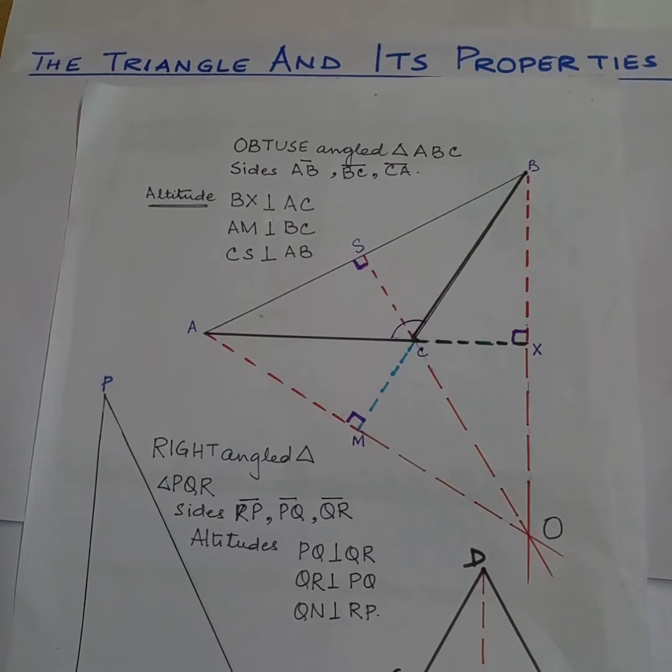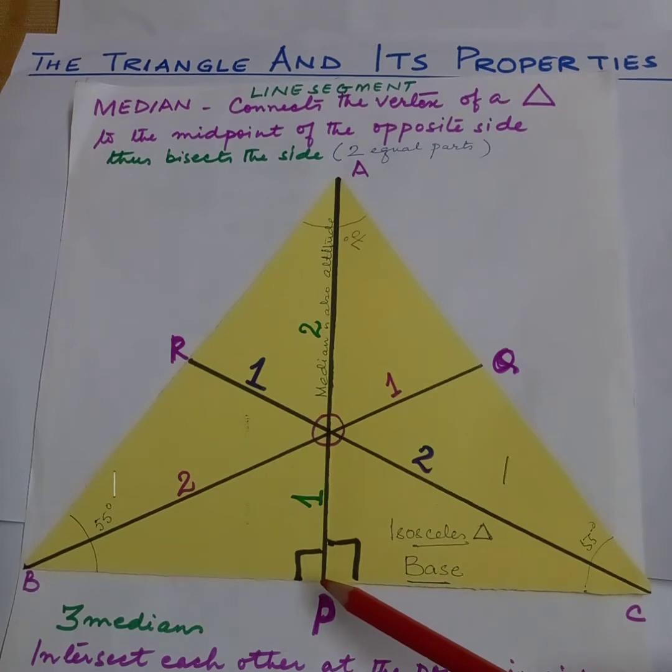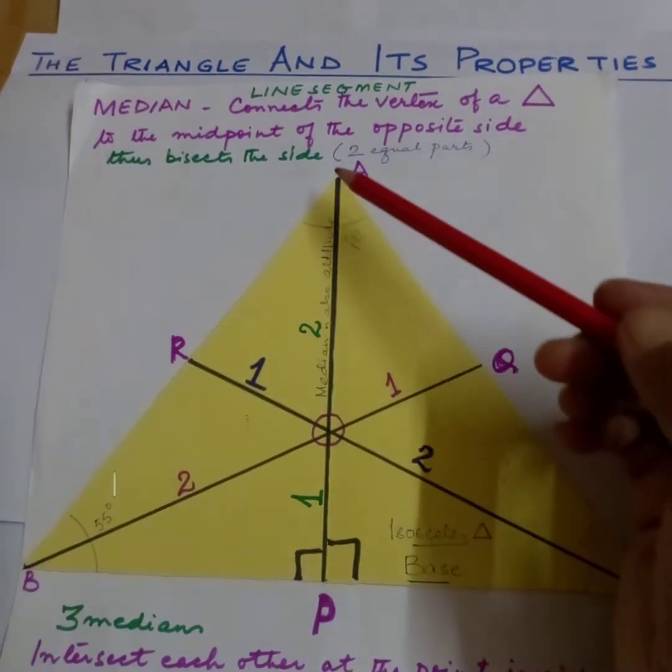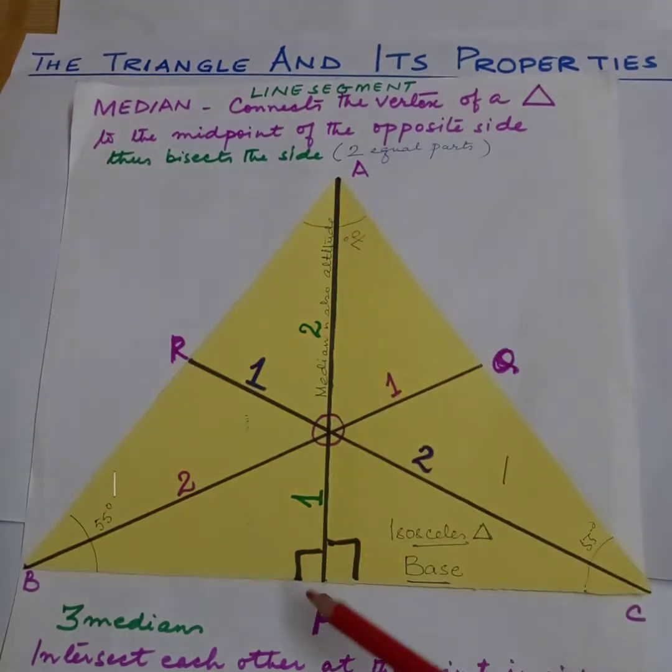An altitude of a triangle is the line segment drawn from the vertex perpendicular to the opposite side of the vertex. A triangle has three altitudes.